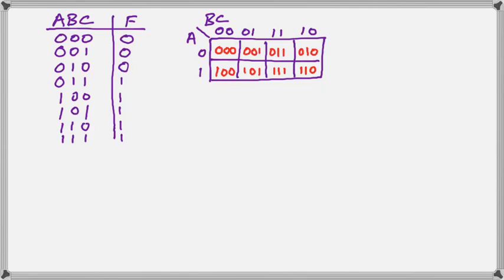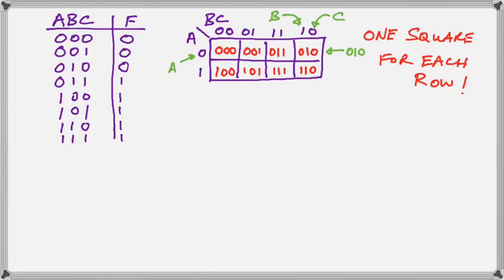And we know this because you can see there in the green that the A and the B and the C come directly from the rows. So study this until you are satisfied that you know how to find the special square for each individual row of the truth table.